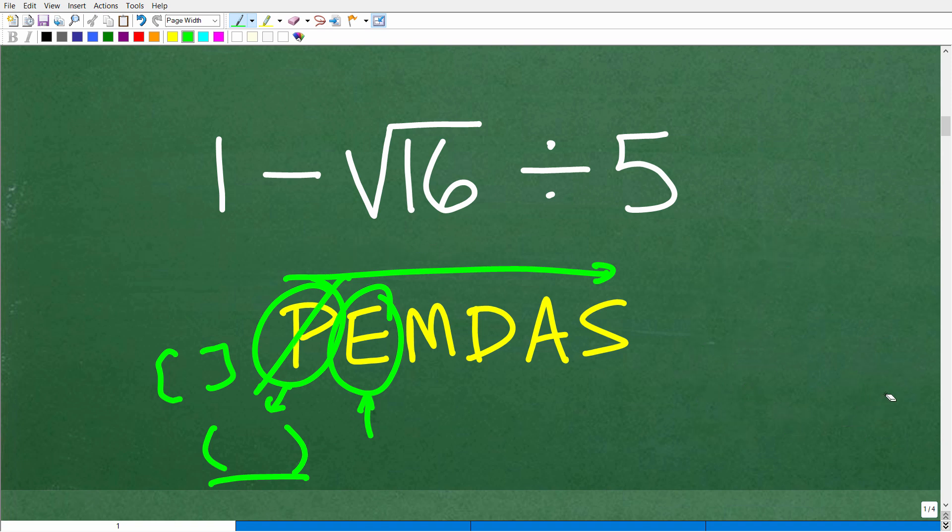So, okay, so that's what E stands for. Now, let's go ahead and take a look at the next thing, and this is a very commonly confused thing. Matter of fact, let me just tell you what M, D, A, and S stand for. So, M stands for multiplication. D is division. A is addition. S is subtraction.